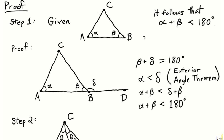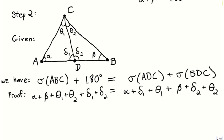This step will come in handy later — we'll derive a contradiction using it. In the next part of the proof, step 2, we show that given triangle ABC with a point D on side AB, which splits the triangle into triangles ADC and BDC, we can relate the angle sums of all these triangles.